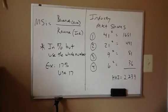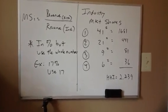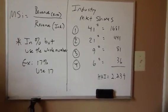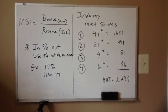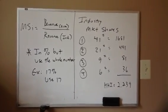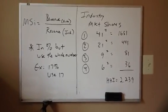So, let's see what we get when we talk about the Herfindahl. In this case, we're going to square each of these numbers, and I have the product of that square on the right side. So, 41 squared, 21 squared, 9 squared, and 6 squared. And when we add all those up, we get a Herfindahl level of 2,239.